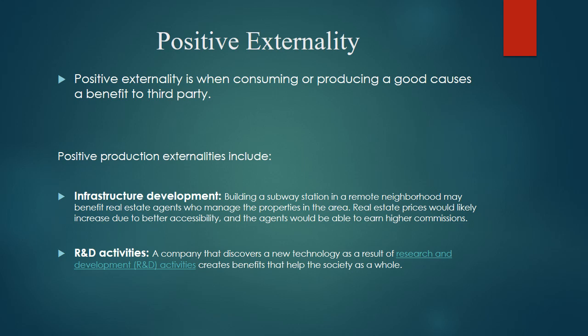Positive externality can come from production — production externalities like infrastructure development. For example, building a subway station in a remote neighborhood may benefit real estate agents who manage properties in the area. Real estate prices would likely increase due to better accessibility, and the agents would be able to earn higher commissions.